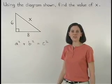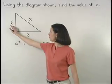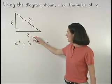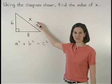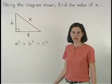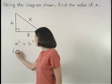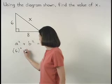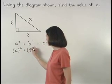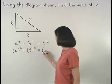So here, since our legs have lengths of 6 and 8 and our hypotenuse has a length of x, we can set up the equation 6 squared plus 8 squared equals x squared.